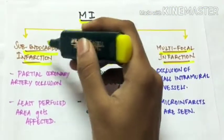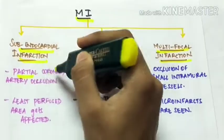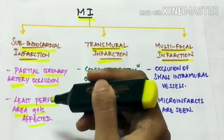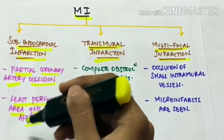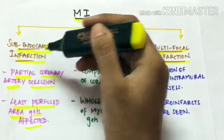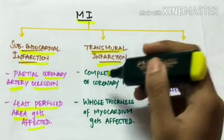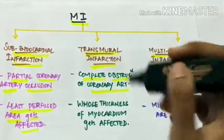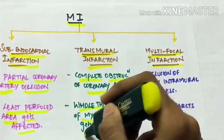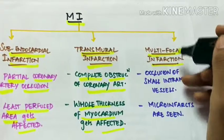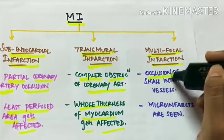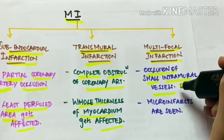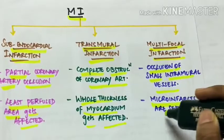Sub-endocardial infarction occurs when there is partial coronary artery occlusion; the least perfused area — the sub-endocardium — gets affected. Transmural infarction involves complete obstruction of the coronary artery, affecting the entire thickness of the myocardium. Multifocal infarction involves occlusion of small intramural vessels while the coronary arteries are spared, resulting in microinfarcts.